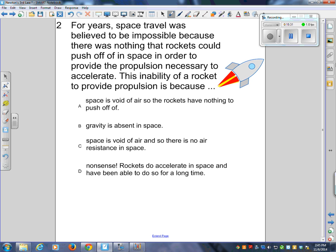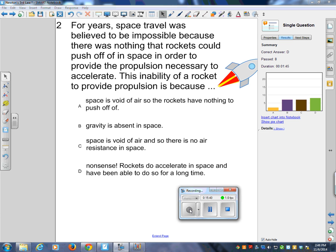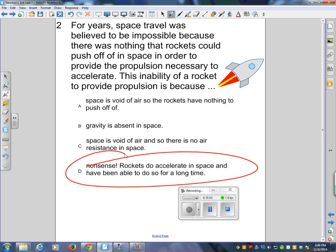Let's try another one. For years, space travel was believed to be impossible because there was nothing that rockets could push off of in space in order to provide the propulsion necessary to accelerate. They actually believed, imagine me on a roller blade, I push on the table, the table pushes back on me, what do I do? I go back. When you go swimming, you push on the water, the water pushes on you, you go forwards. When you drive your car, the tires push on the road, the road pushes on you, you go forwards. There's nothing in space, so there's nothing to push off of. Baloney. Nonsense, if you will. Rubbish.